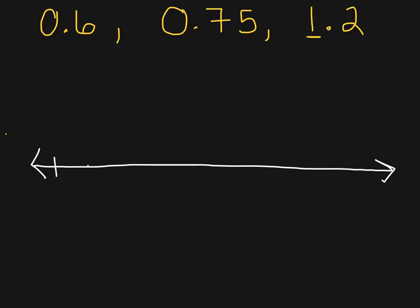Let's start off with a zero, because all of our numbers are greater than zero. The next thing we're going to ask ourselves is, what next whole number are we going to need? Are we going to need a one? Are we going to need a two? Well, we could probably stop at two — we have one and two tenths, which tells us we're going to need numbers greater than one, but all three of our numbers are less than two. So on our number line, we can stop at two. Let's put a number in the middle, because halfway between zero and two is one, so place a one about halfway in between.